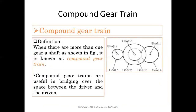The next gear train is the compound gear train. The basic difference from simple gear train is that here, on shaft B, two gears are mounted — gear two and gear three — on the same shaft. Gear one is on shaft A and gear four is on shaft C. Input is given to shaft A and output is taken from shaft C. Since gear two and gear three are mounted on the same shaft, their speeds are equal.